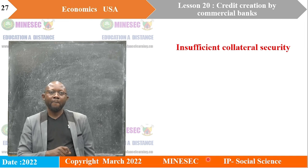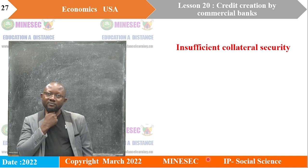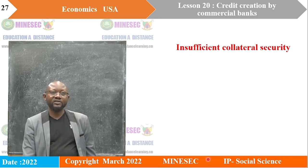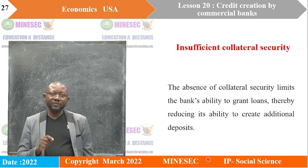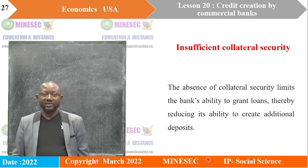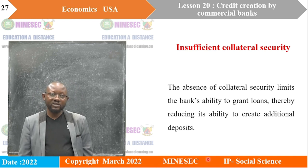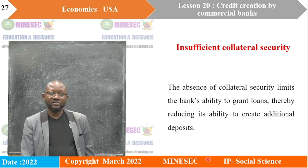Another limitation is insufficient collateral security. When a bank has very high security standards — always requiring collateral security before loans are granted — it will grant very little loans and obviously create little credit. The absence of collateral security limits the bank's ability to grant loans, thereby reducing its ability to create additional deposits. If most customers do not have collateral security, the bank grants fewer loans, and less credit is created.